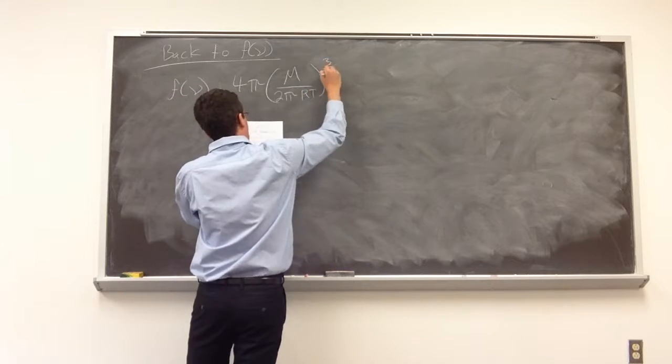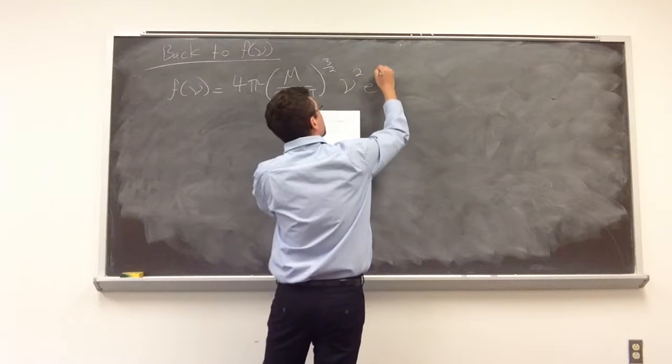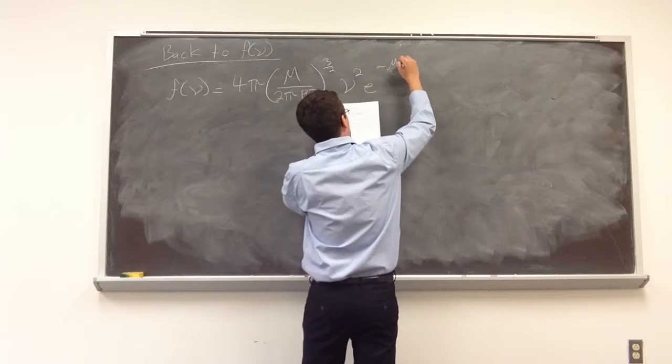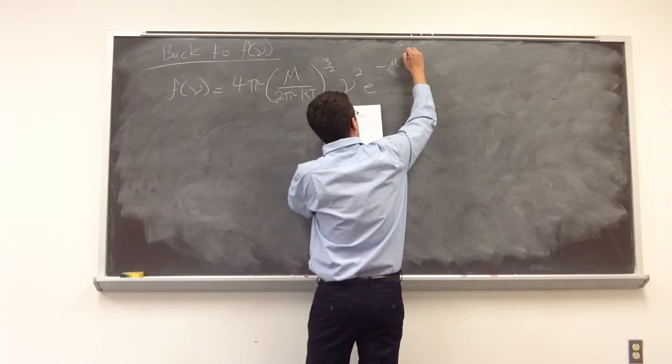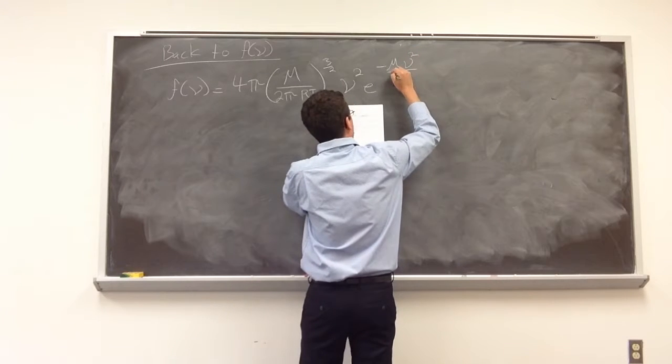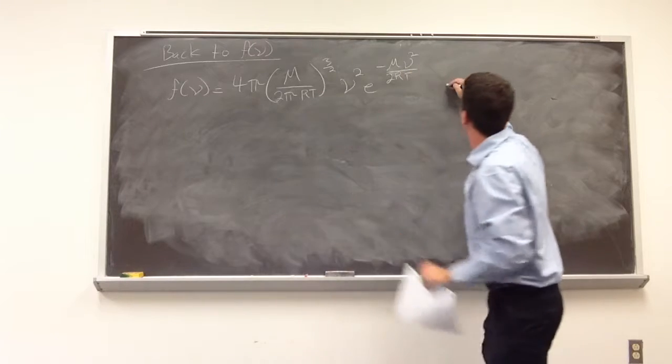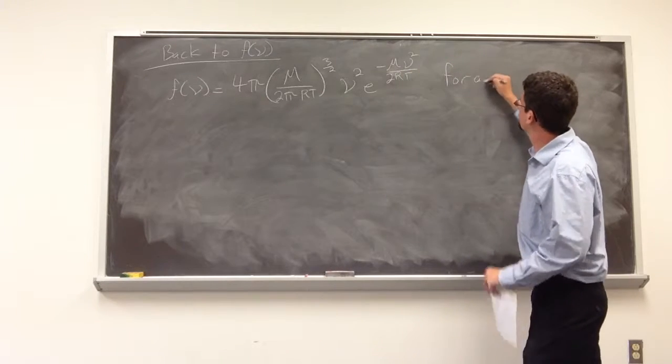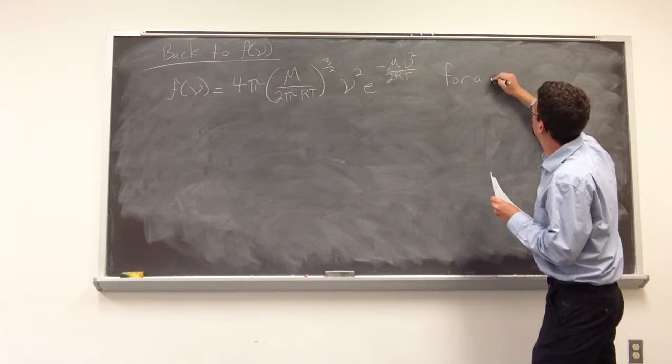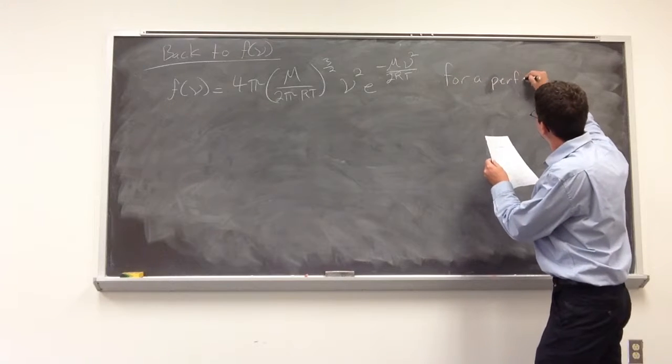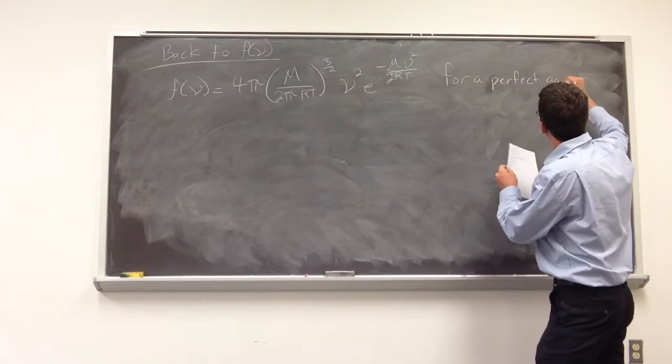Nu squared E to the negative m nu squared divided by 2 RT. So this is for a perfect gas.